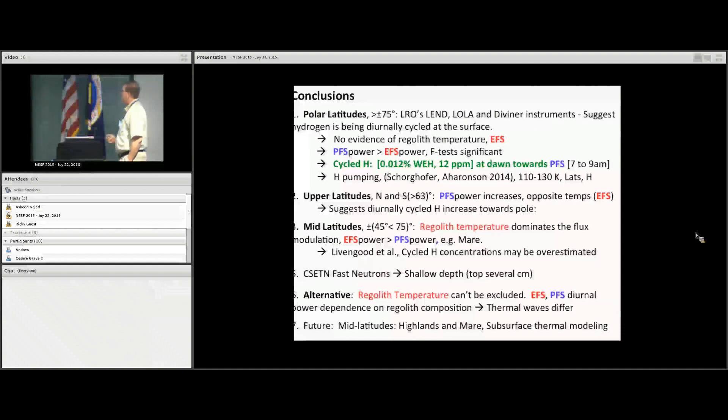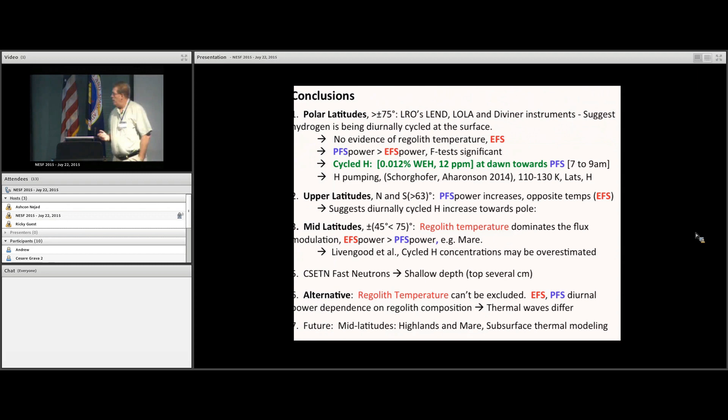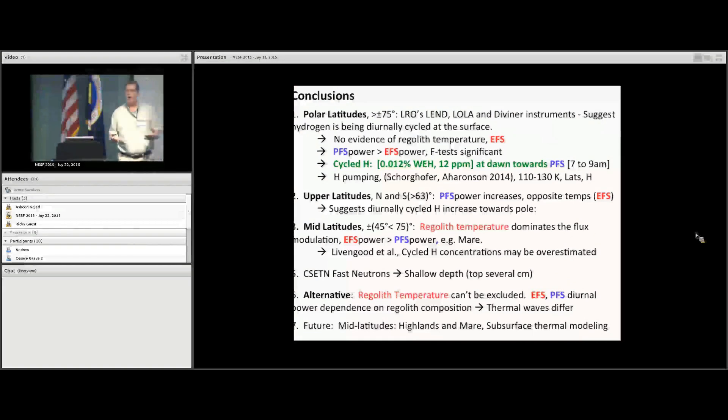The other interesting thing is that in the upper latitudes above about 63 degrees, we have this unexplained increase in the poleward facing slope power. This is opposite again what we expected from a regolith temperature driven modulation of the neutron flux. This again suggests diurnally cycled hydrogen may be increasing as you move from about 63 degrees to the pole. In the mid-latitudes, we seem to have an important contribution from regolith temperature. This appears to be a dominant contribution, especially in the mare. This may have some impact to Tim Livingood's paper, in which if the regolith temperature, then we need to understand what the exact mixing ratios are of temperature and cycled hydration. These are going to be important things for us to consider to study moving into the future. It's also very possible that we're detecting this in fast neutrons.